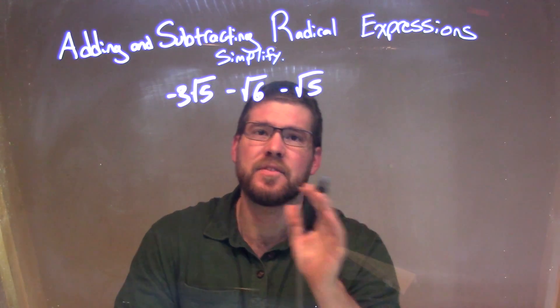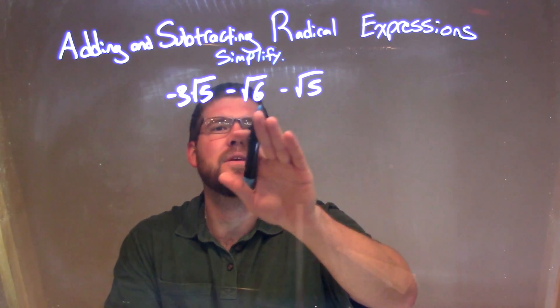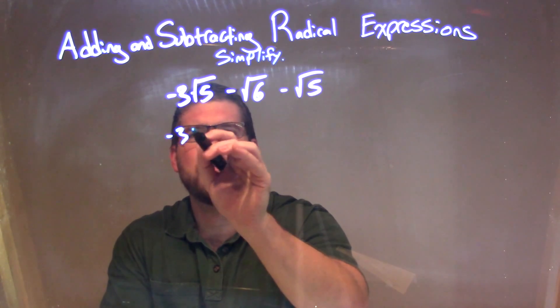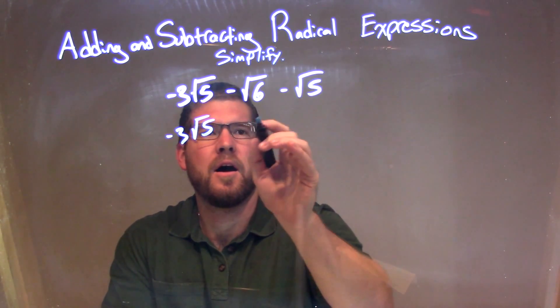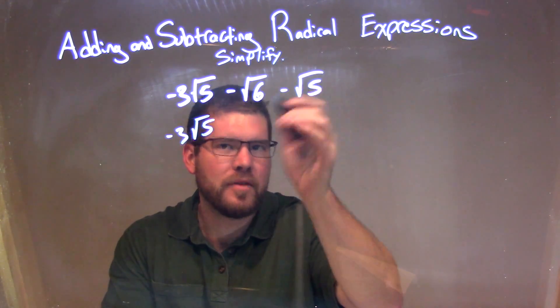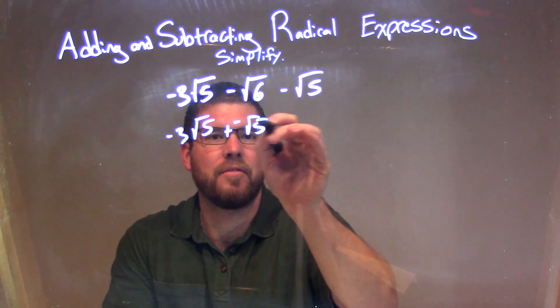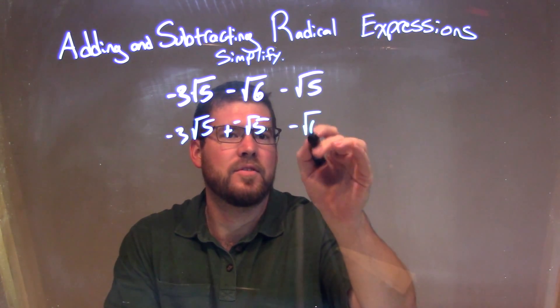So I'm going to bring the minus the square root of 5 over here, so we have negative 3 square root of 5. Let's make it with a plus and negative, plus and negative square root of 5 there, and then we have a minus square root of 6 right there, okay?